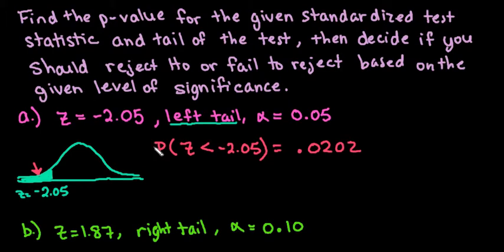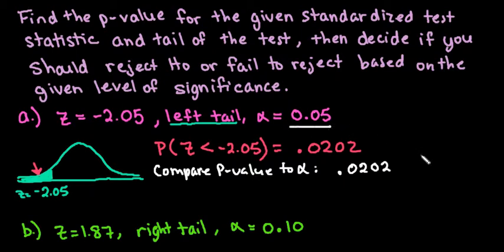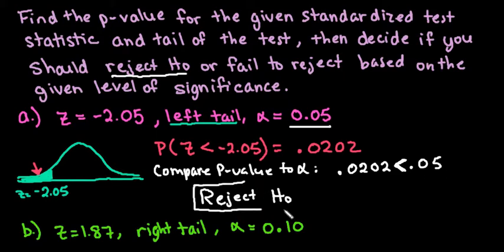So what we got for this one was 0.0202. And then to make our decision, what we are going to do is we're going to compare P to alpha. So our P value is 0.0202, and our alpha is 0.05. And so then we would look at this, and if our P value is less than or less than or equal to, then we are going to reject the null hypothesis. If it is greater than, then we will fail to reject. So for this one, we will reject the null hypothesis.